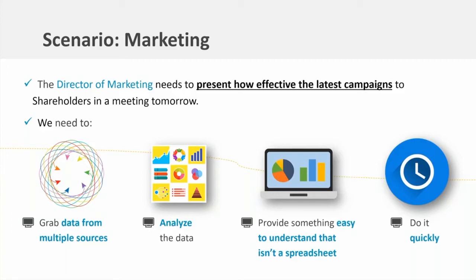Maybe the external marketing team provides TV ratings in an Excel spreadsheet, then you grab website analytics from Google Analytics, and something from Mailchimp as well — bringing all these reports together. Then we have to actually analyze that data, go through filters, and come up with recommendations. Beyond that, we cannot just hand shareholders a spreadsheet. They want to see PowerPoint presentations or a nice visual PDF — something easy to understand.